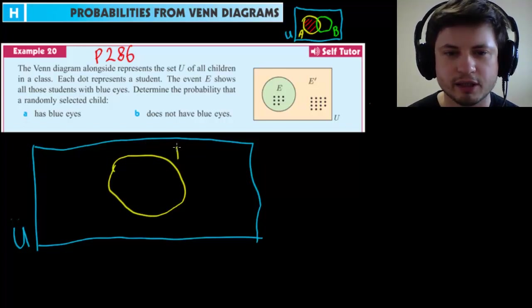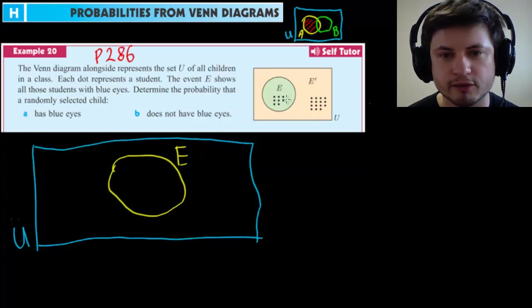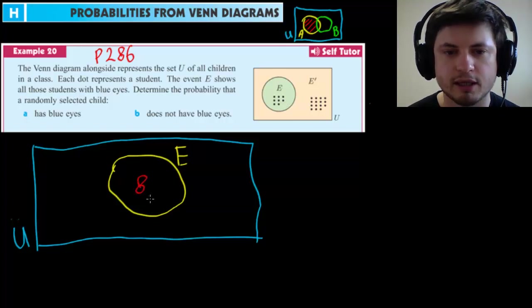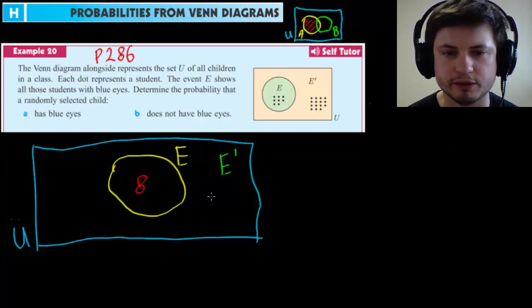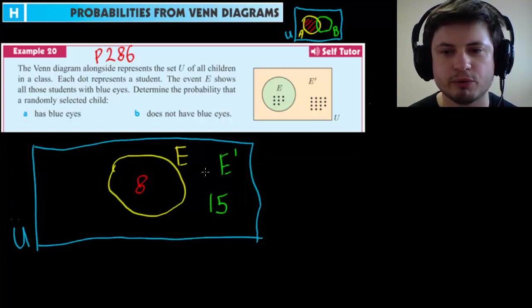So E is all students with blue eyes. We have total of eight students on the inside, so we're going to mark it as eight. And then we have not E on the outside, and this is our students without blue eyes. There are 15 students without the blue eyes. We're going to put it 15 right here. And that's really it. So this is our Venn diagram.